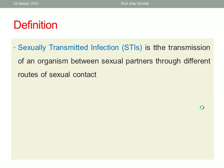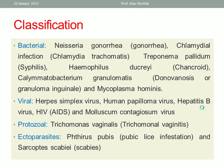Let's start with the definition of sexually transmitted infection. It is the transmission of an organism between sexual partners through different routes of sexual contact. So what are the classifications?